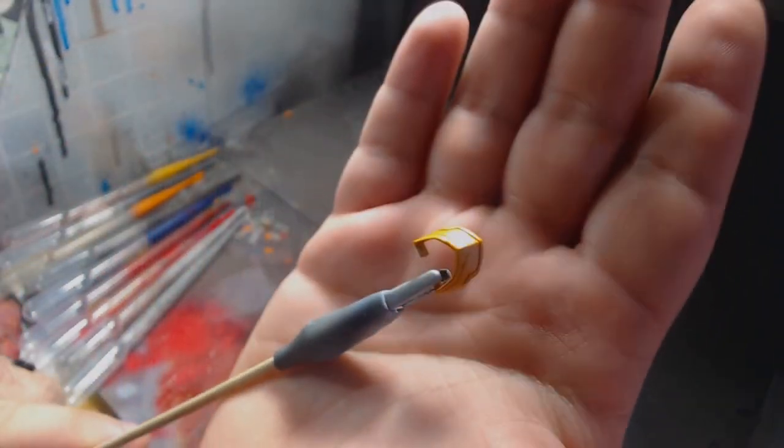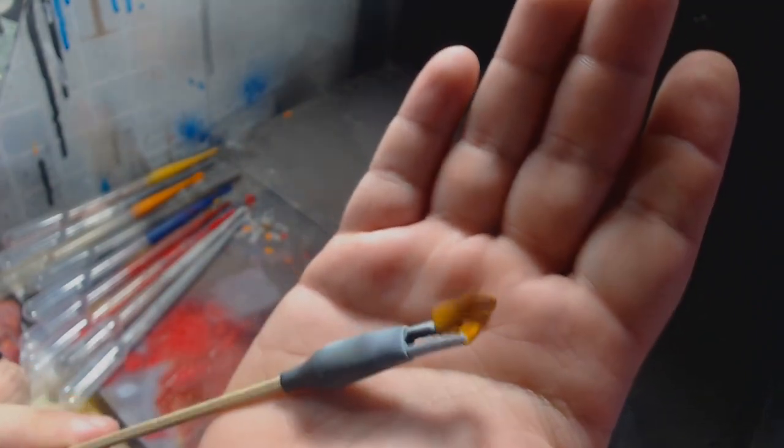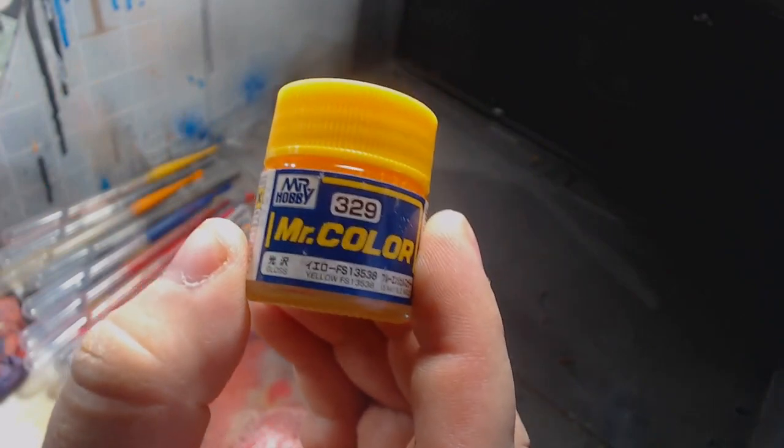For the yellows, I started with a 50-50 mix of Mr. Color Yellow and Mr. Color Orange, just to create a nice orangey base without it being too much of a neon orange. Now for the yellow parts, I approached the shading just a little bit differently since most of it was just really long pieces like the V-Fin antennas and things like that.